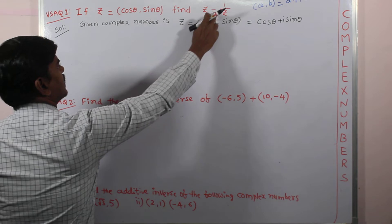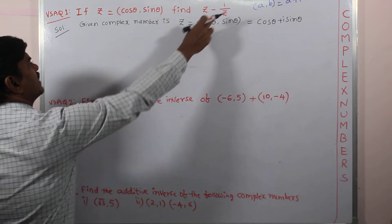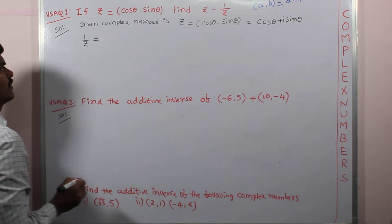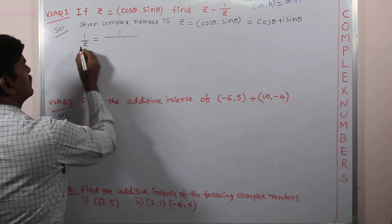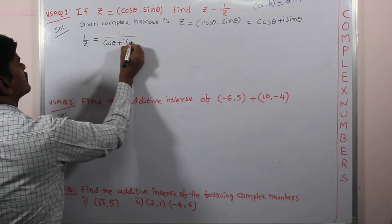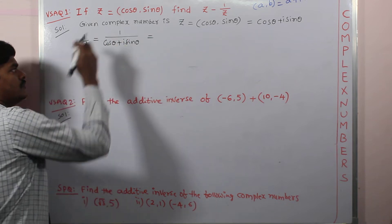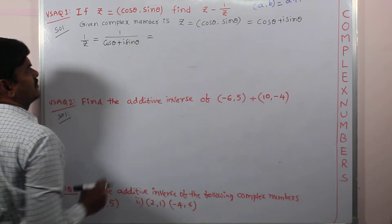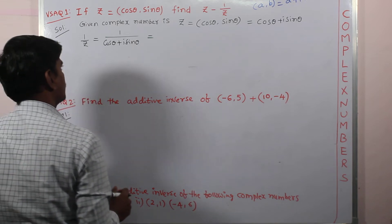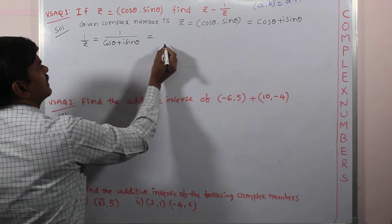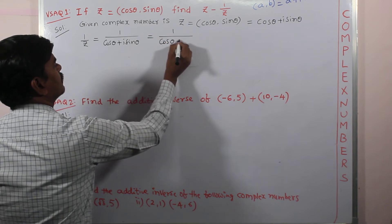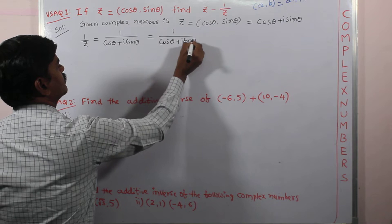To find z minus 1 by z, we have to find first 1 by z. With the help of z, we can find 1 by z. Substitute z as cos theta plus iota sin theta. This is division of complex numbers. For division of complex numbers, we generally proceed with the rationalization process — rationalizing the denominator.